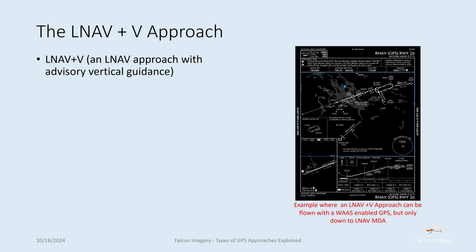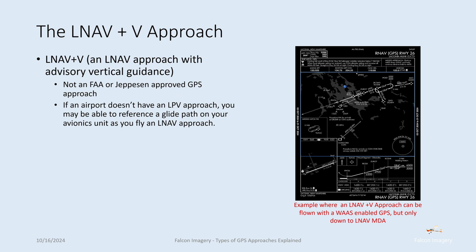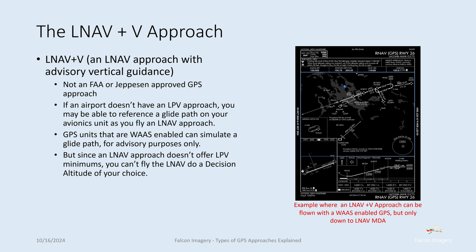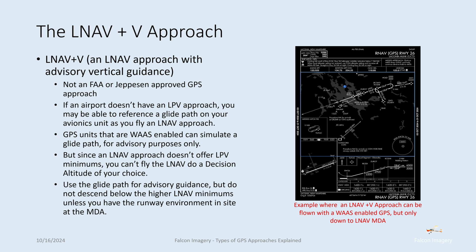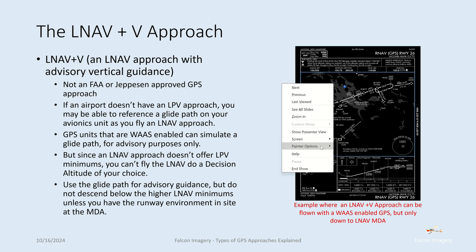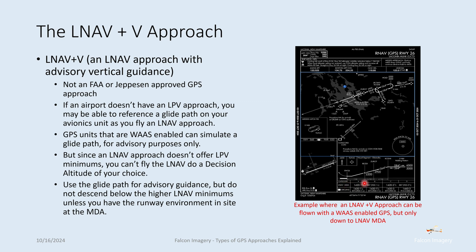Next, we have the LNAV plus V approach — lateral navigation with advisory vertical guidance. It's not considered an FAA-approved GPS approach. If an airport doesn't have an LPV approach, you may be able to reference a glide path on your GPS avionics as you fly that LNAV approach in. The GPS unit must be WAAS-enabled to simulate a glide path for advisory purposes only. Since an LNAV approach doesn't offer LPV minimums, you must fly it down to the LNAV MDA on the instrument approach procedure — in this example, an MDA of 1,420 feet — even though the WAAS-enabled GPS provides that vertical guidance.